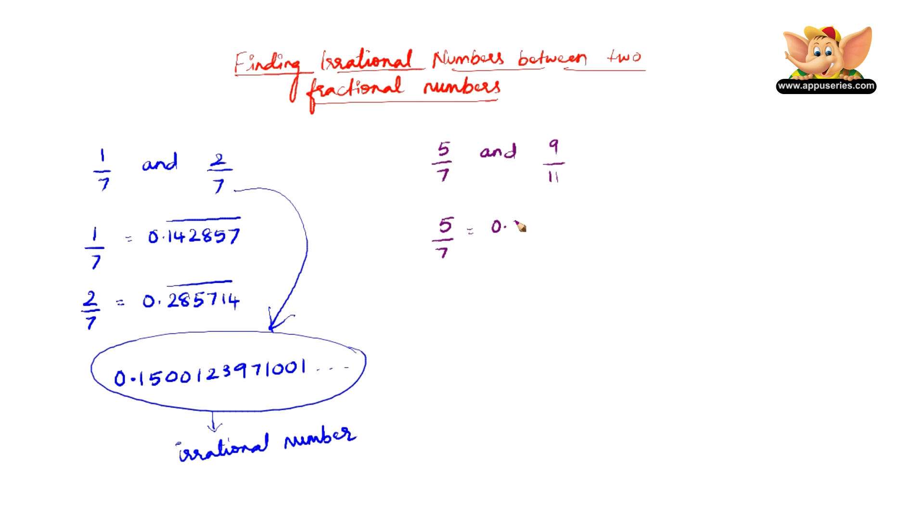5/7 is nothing but 0.714285 recurring, and 9/11 is 0.81 recurring.